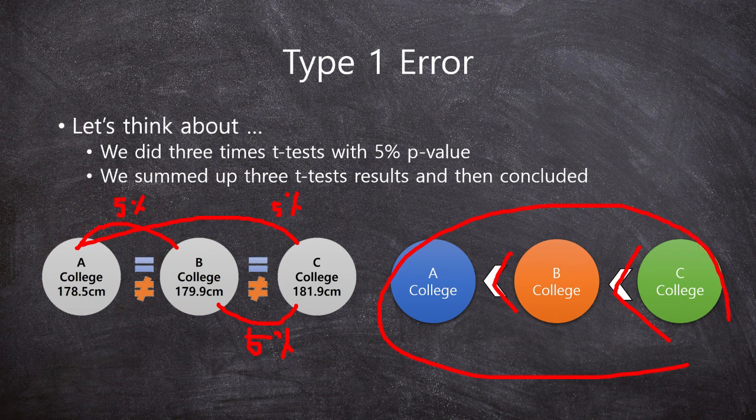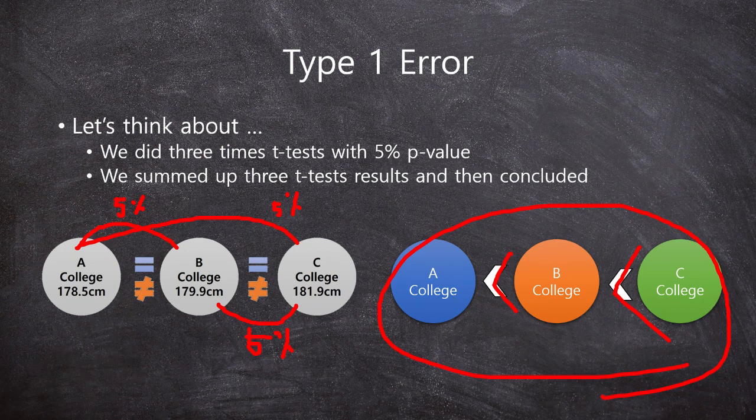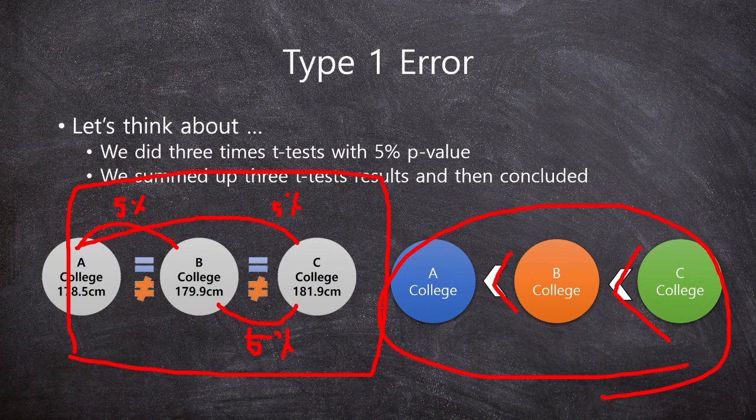So, A, B, C is like this. This is our conclusion from the 3 times t-test, multiple t-tests. What is the problem?